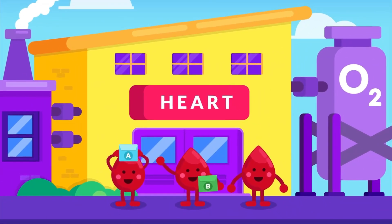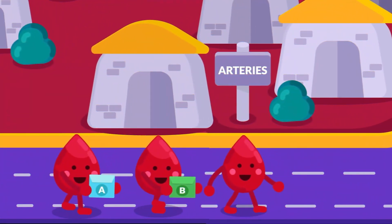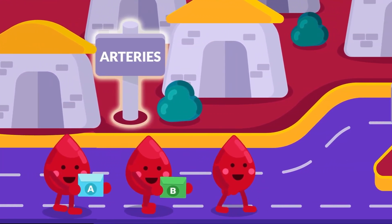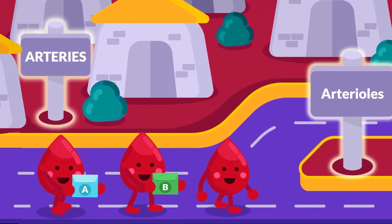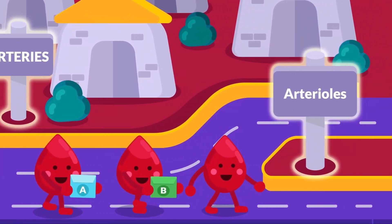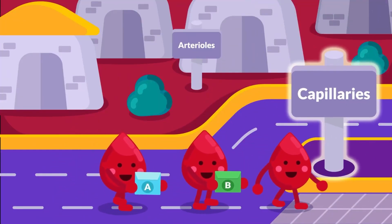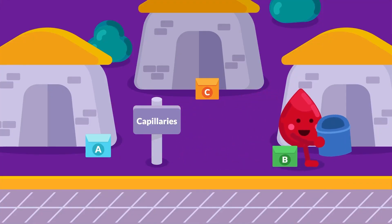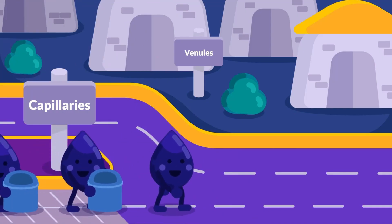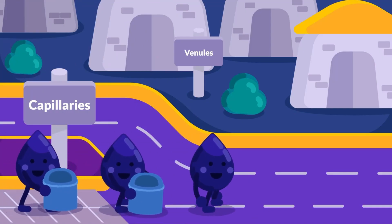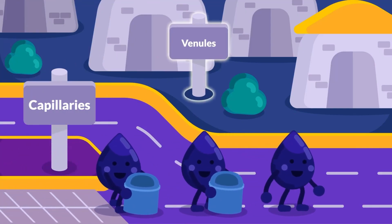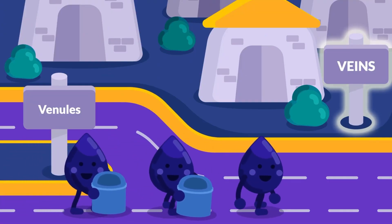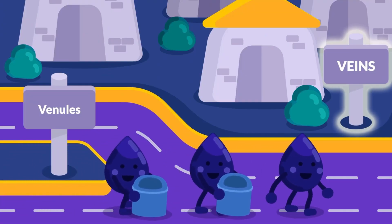What do arterioles and venules do? Blood in arteries travels away from the heart and then diverges into smaller branches, forming arterioles. Blood is distributed to capillary beds, which are the exchanging spots with the tissues. Capillaries then lead the blood flow to the smallest branch of the veins, which are the venules. These little vessels transport the blood to the veins, which then eventually return to the heart.